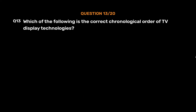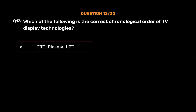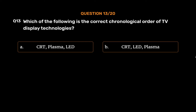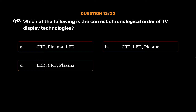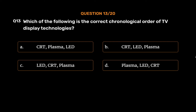Question No. 13: Which of the following is the correct chronological order of TV display technologies? Option A, CRT, plasma, LED; Option B, CRT, LED, plasma; Option C, LED, CRT, plasma; Option D, Plasma, LED, CRT. The correct answer is Option A: CRT, plasma, LED.